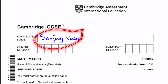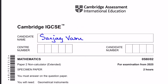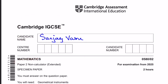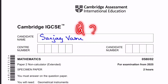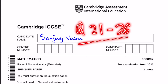Hello everyone, it's me, Sanjay Vasu, back again for another video. This time I'll be doing Cambridge IGCSE Mathematics Paper 2, which is a non-calculated paper for extended students, for examination from the 2025 specimen paper. I'll be doing part 3 of my walkthrough on this paper, covering questions 21 through 26.